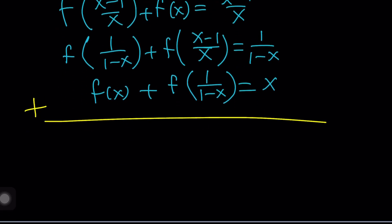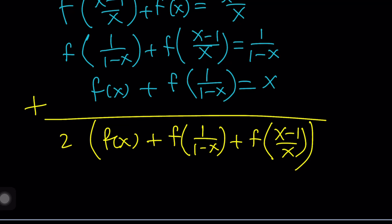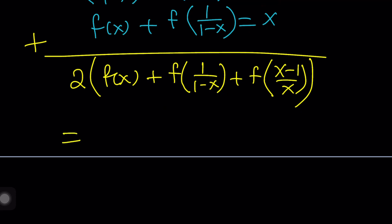So we're going to add these up. And guess what that's going to give us? We're going to get two of each, which, in other words, we're going to be getting from here two times f of x. I want to write the f of x first, and then f of 1 over 1 minus x. Too much of a space. f of 1 over 1 minus x, plus f of x minus 1 over x. Everything comes twice. And the sum, who knows what, right? That's going to be something complicated.